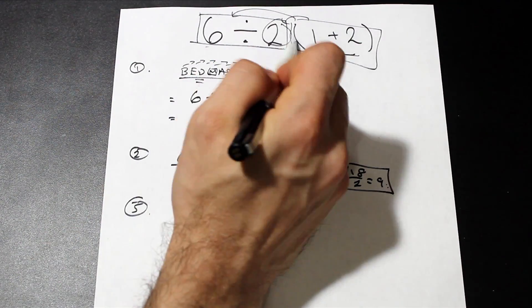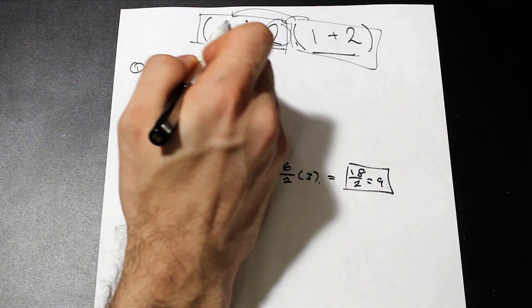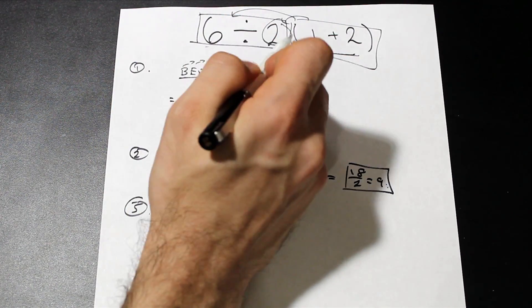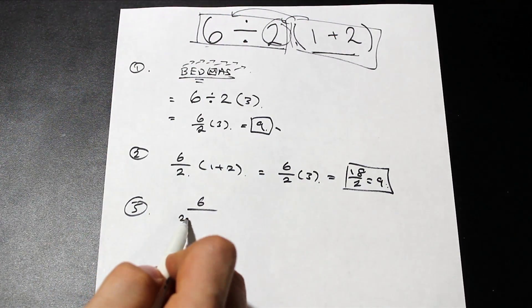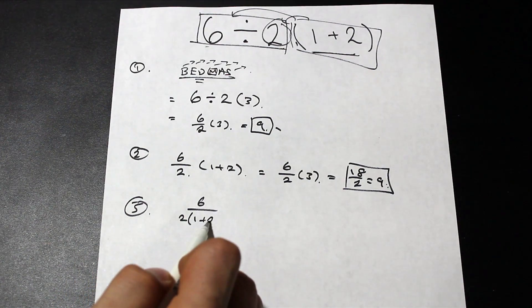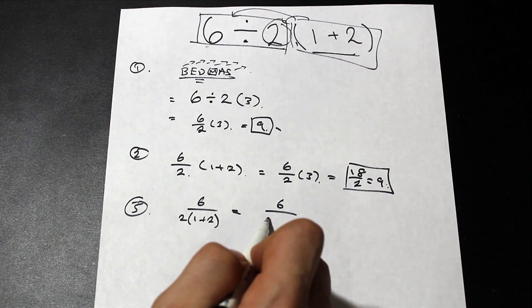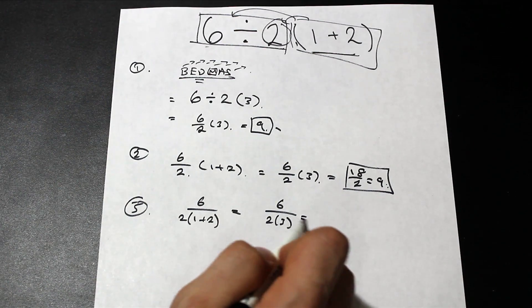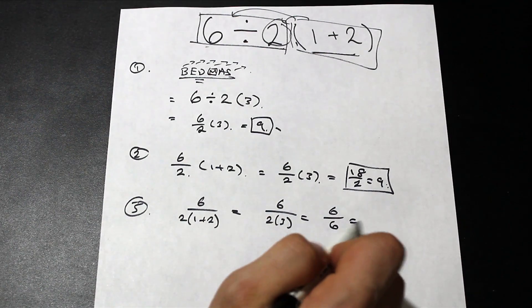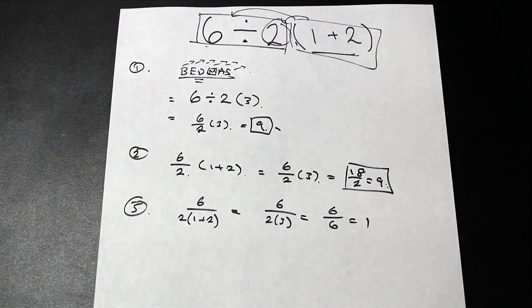The argument is that one plus two is actually multiplied by the two term, and that's divided by six. So six is divided by this whole term here. If we carry that one plus two down to the bottom, we're going to have six divided by two times three—that's going to be six divided by six, which is equal to one. So that's where the one comes from.